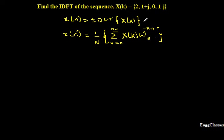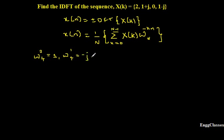Now X of K is given and I need to expand the limit and find X of N. Before that I should know the twiddle factors. W4 to the power 0 is equal to 1. W4 to the power 1 is equal to minus j. W4 to the power 2 is equal to minus 1. And lastly W4 to the power 3 is equal to plus j.